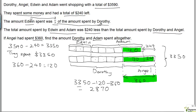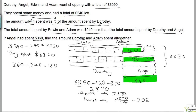That works out to be $2,870. So $2,870 equals 14 units — one, two, three, four, five, six, seven, eight, nine, ten, eleven, twelve, thirteen, fourteen units. So 14 units equals $2,870, meaning one unit equals $2,870 divided by 14, which is $205.